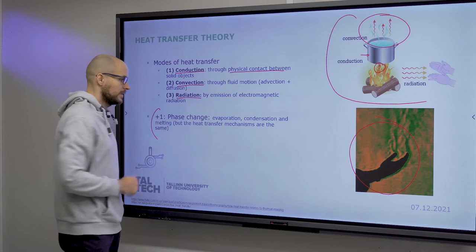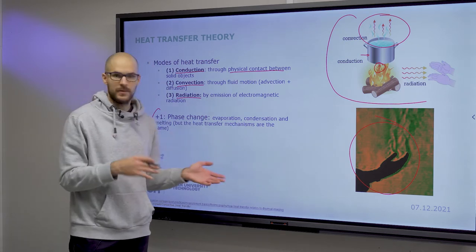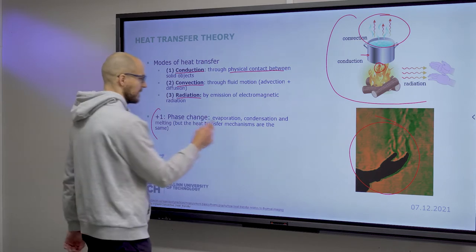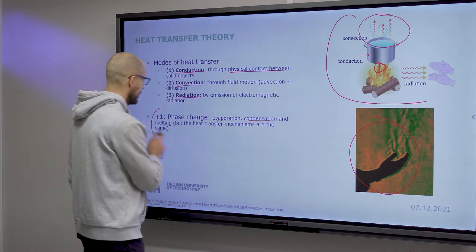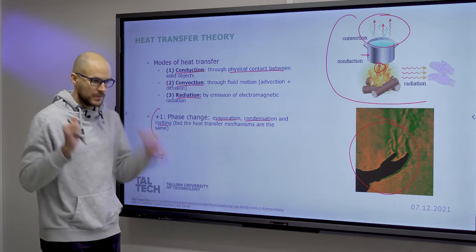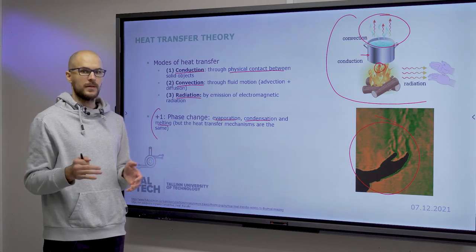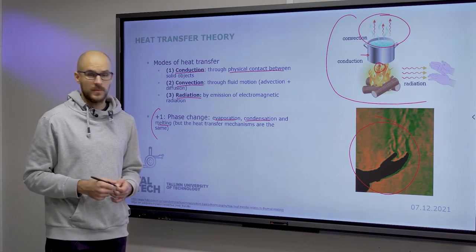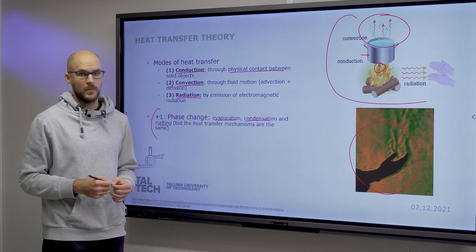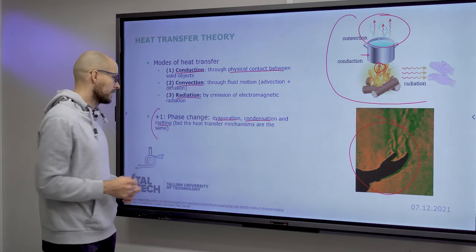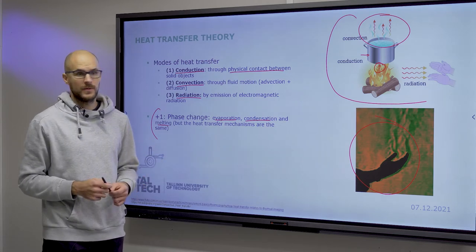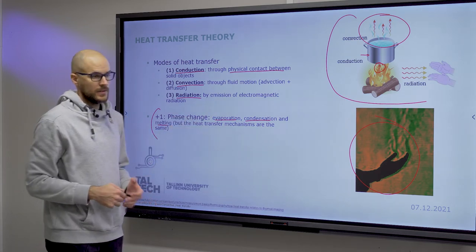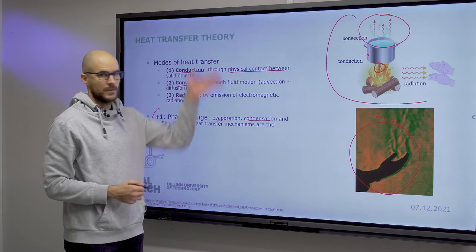Plus one would be phase change. When you have solid-liquid or liquid-vapor transition through evaporation, condensation and melting. These are all valid ways of transferring heat in lab-on-a-chip applications. Evaporation actually happens quite a lot, even if you don't want it, and that's a thing you must consider. But with these three, the heat transfer mechanisms are still the same.